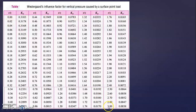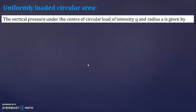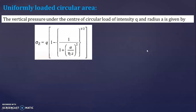Now let us see the formula for a uniformly loaded circular area. The vertical pressure under the center of a circular load of intensity Q and radius A is given by Westergaard's analysis as: sigma Z = Q × [1 − 1/√(1 + (A/νZ)²)]. This formula is slightly different from the Boussinesq equation for a uniformly loaded circular area.